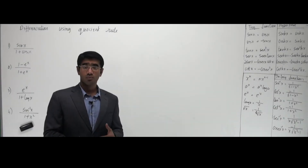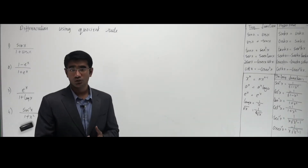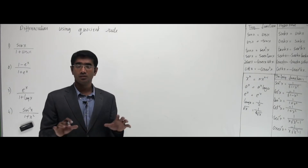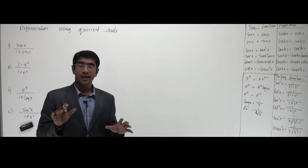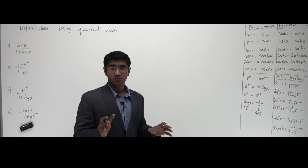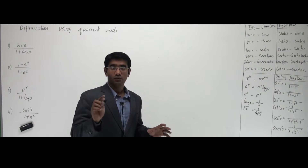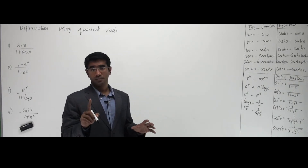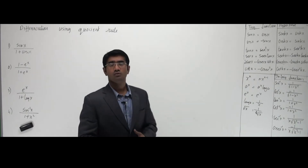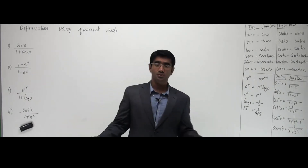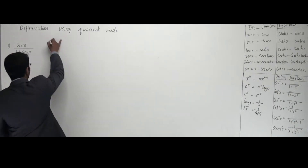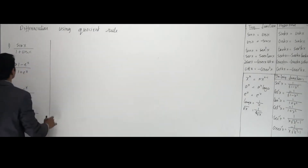Alright guys, now let's work with more problems with the quotient rule. Remember what we are doing here is just separating the functions and differentiating. As the rule states, we are only differentiating one function at a time. The differentiation formula is this. You don't have to do thousands of problems — you just need to know the technique. So let's know the technique here and go with the first problem.